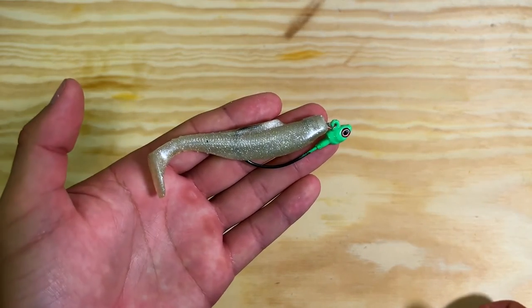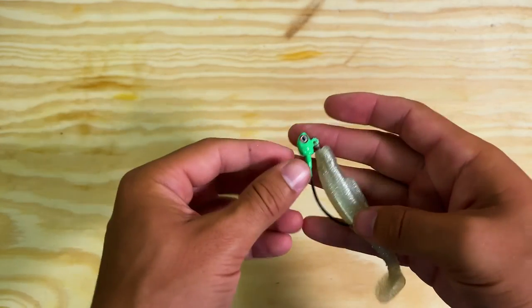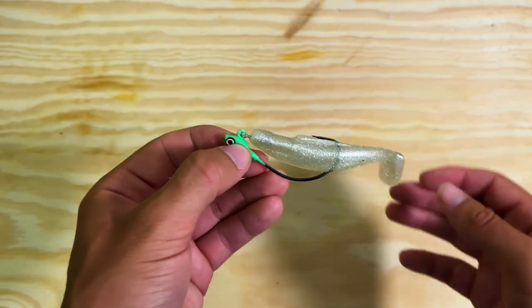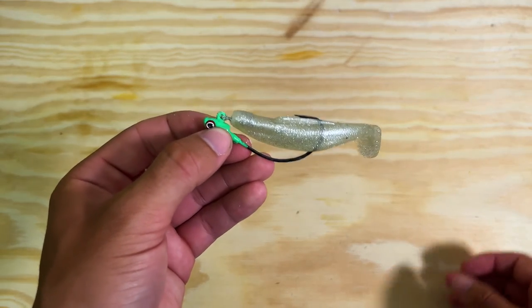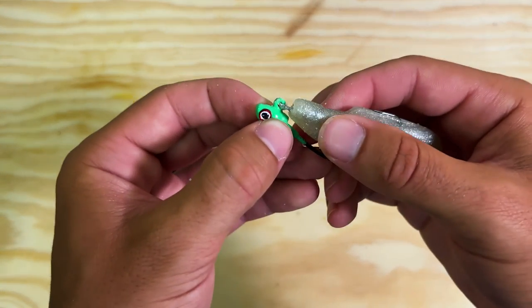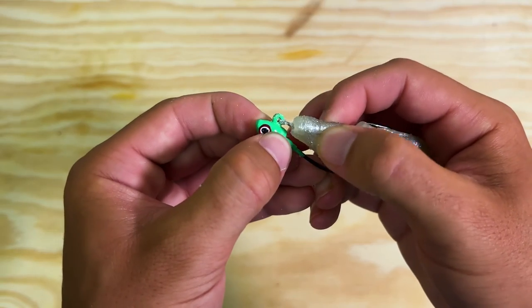That is the quickest and easiest way to get a screw lock into a Z-Man plastic. And now if you look, especially with that Loctite in there, not coming out.